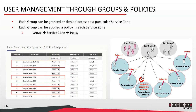Groups and policies are applicable to users on networks hosted by the controller. Each group can be granted or denied access to a particular service zone, and each group can have a different policy in different service zones. In general, a user is assigned to a group based on the account or authentication method used for login. The controller then checks if that group can access the service zone the user is trying to reach, and if so, users are governed by the group policy for that service zone.